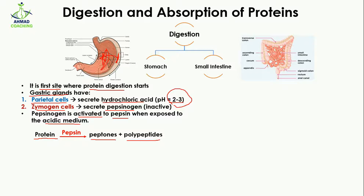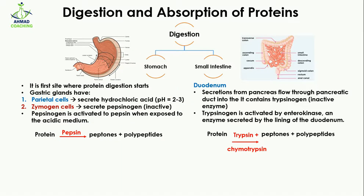We know that the stomach is also made up of protein, so if the pepsinogen produced in the walls of the stomach were already in active pepsin form, it would digest the stomach walls and damage the stomach structure. For this reason, pepsin is produced in the inactive pepsinogen form, so it does not damage the stomach walls. It moves from the walls towards the lumen, where it is activated and then acts on the food consumed.